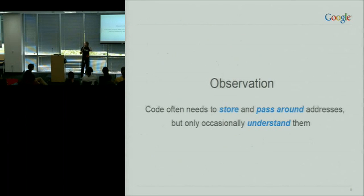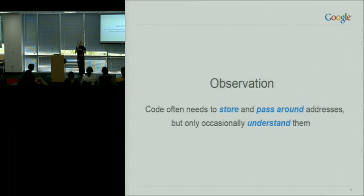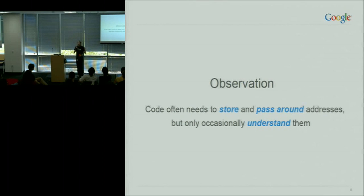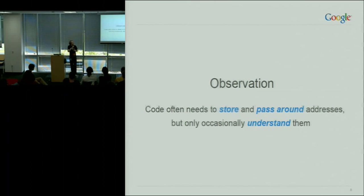When we'd been doing this for a couple of months, we saw that most code actually does not need to care about what an address is. You get an address object from somewhere, pass it around, maybe store it, maybe convert it to a string, but you don't actually need to care what it is. The structure of an IP address — unless you're writing a router — is something you just don't need to care about.